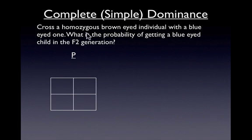That is the first two parents that we see here. We have our homozygous brown-eyed individual crossed with a blue-eyed. When we work out the Punnett square, we notice that we get 100% brown eyes.